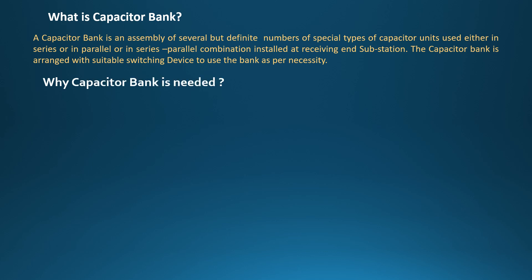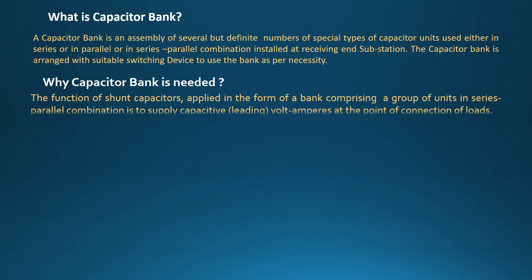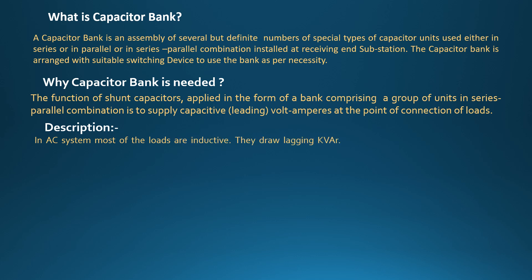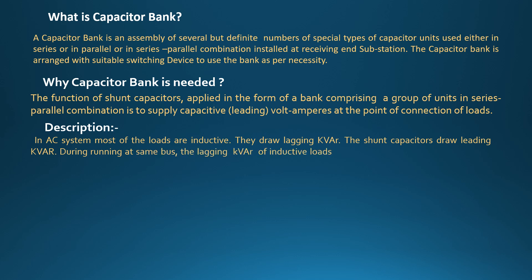Why is a capacitor bank needed? The function of shunt capacitors applied in the form of a bank comprising a group of units in series-parallel combination is to supply capacitive volt-amperes at the point of connection of loads. In an AC system, most of the loads are inductive — they draw lagging KVAR. The shunt capacitors draw leading KVAR. The lagging KVAR of inductive loads such as motors, welding machines, arc furnaces, etc., is compensated by the leading KVAR of shunt capacitors.